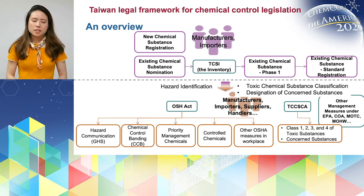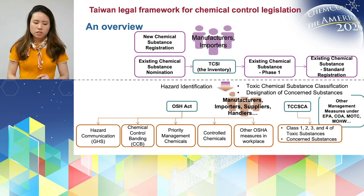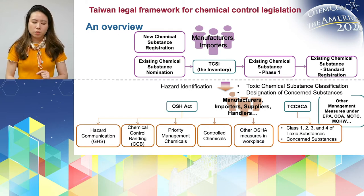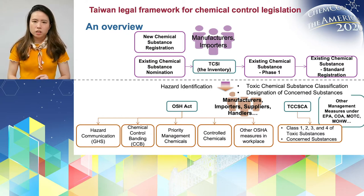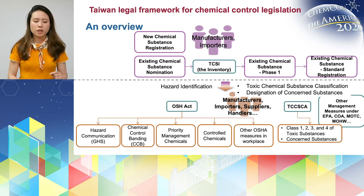Under TCCCA — the abbreviation of the mother law under the EPA — it has different categories. We call them class 1, 2, 3, and 4 of toxic chemical substances. And now, because the law was just amended, it also added another category called concerned substance. So these are the key management measures under TCCCA.